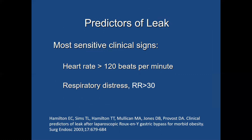So what do you need to predict whether someone has a leak? What we learned as surgeons is it becomes very important to look at clinical indicators. A heart rate greater than 120 beats per minute and a respiratory rate greater than 30 are the two most sensitive early signs predicting a leak. When this is seen, it's not the time to run off to radiology and just hope everything is fine — we need to be thinking about a leak and whether we need to be in the operating room.